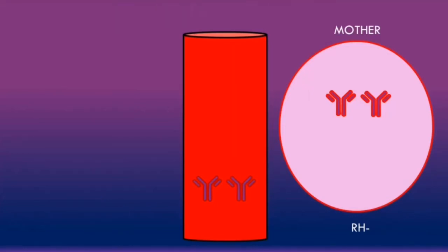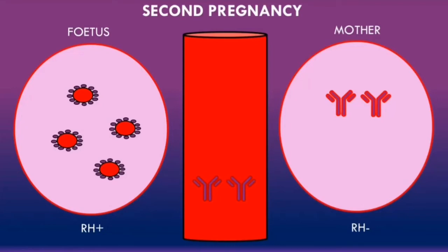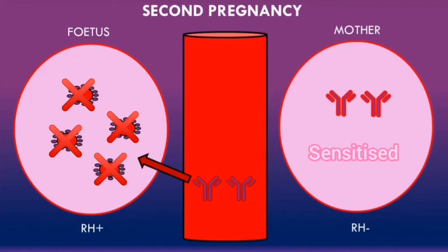However, if the mother has a second baby and the fetus is again rhesus positive, this is much more problematic. A key point about the anti-D antibodies is that they are IgG antibodies, and IgG antibodies are able to cross the placenta. So these anti-D antibodies can cross the placenta and target the rhesus D antigens on the surface of the fetal red blood cells, causing massive hemolysis. The mother was sensitized from her first pregnancy, producing IgG anti-D antibodies which cross the placenta, target the fetal red blood cells, and cause hemolytic disease of the newborn.